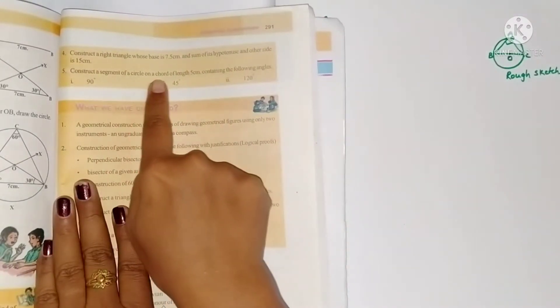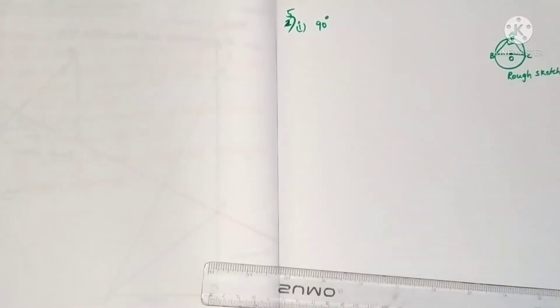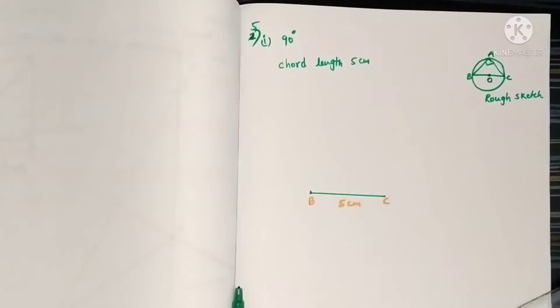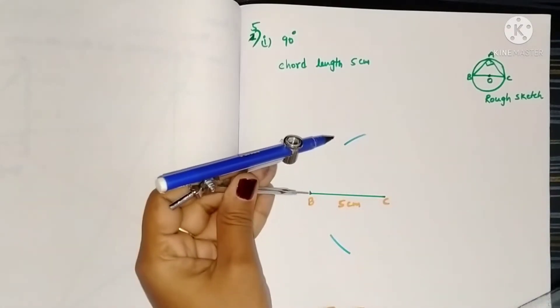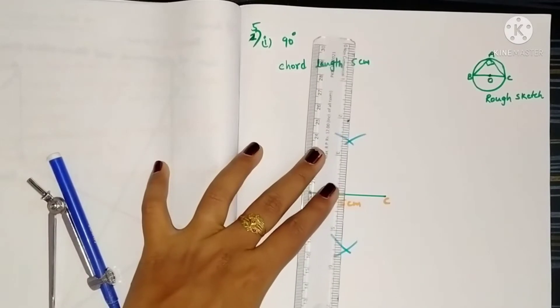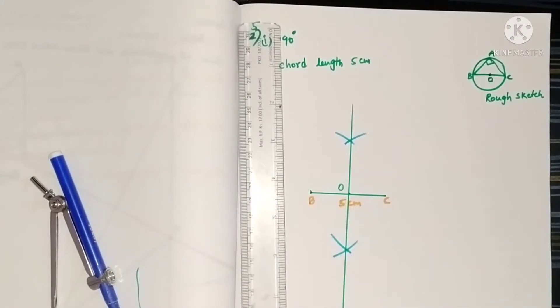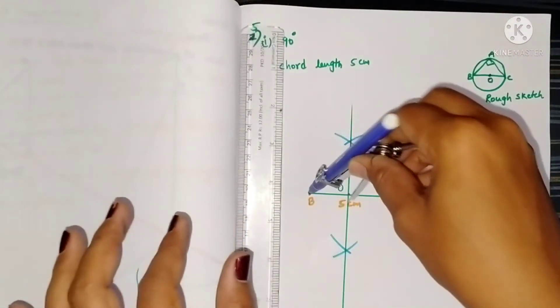Fifth problem: construct a segment of a circle on a chord of length 5 centimeters containing the following angles — 90°, 45°, and 120°. First, for 90 degrees, draw a rough sketch. Now draw a line segment of five centimeters. Next, draw the perpendicular bisector: take more than half and draw the arcs on either side of the line, same from B also. Join the points of intersection — let the intersection point be O.